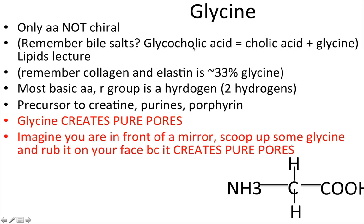Glycine is the only amino acid that is not chiral. Connecting back to the lipids lecture: glycine plays a part in glycolic acid — that's cholic acid plus glycine. Collagen and elastin are approximately one-third glycine. Its R group is a hydrogen, so there are two hydrogens, and when you place the molecule in front of a mirror it can superimpose over itself, making it non-chiral. Glycine is a precursor to creatine, purines, and porphyrin rings like heme. Memory aid: 'glycine creates pure pores' — visualize rubbing glycine on your face to create pure pores.